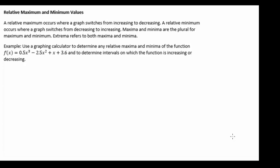A relative maximum occurs where a graph switches from increasing to decreasing. If you can imagine what it means to be increasing, that means our graph is going up, and whenever it switches and starts decreasing, we call that point a relative max.